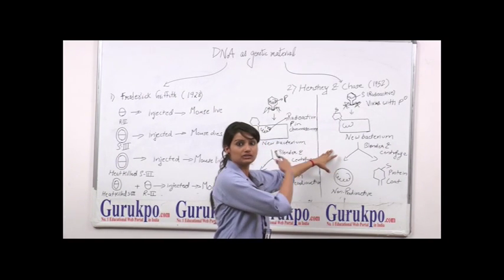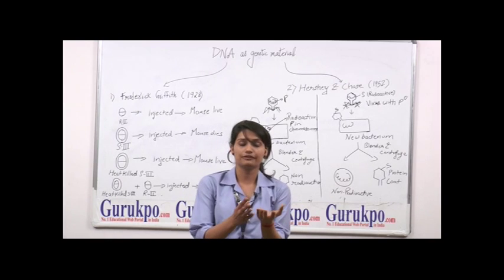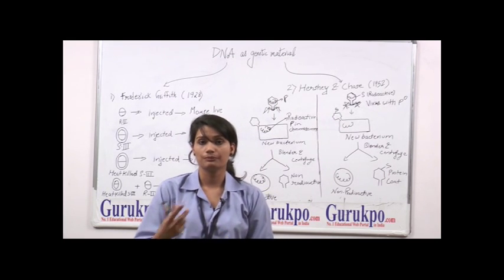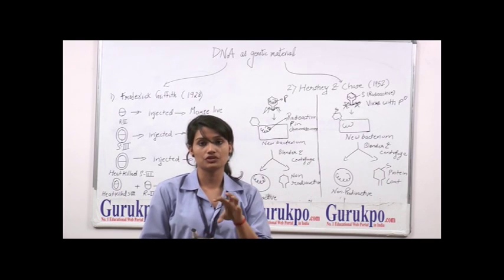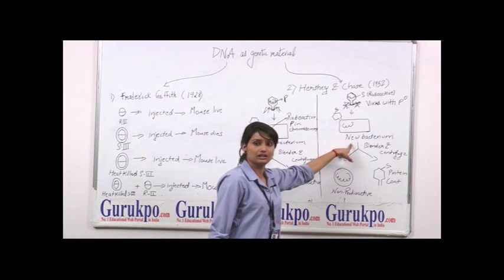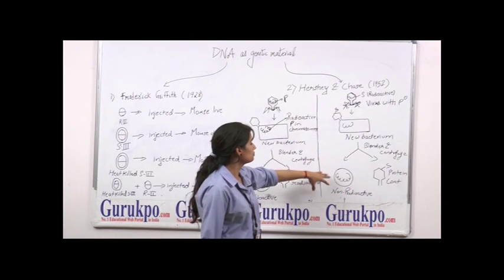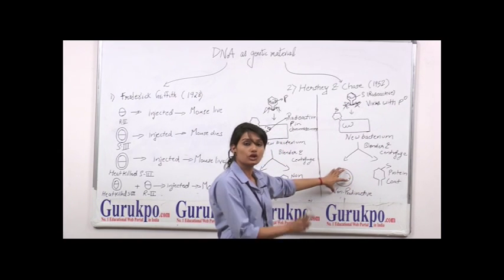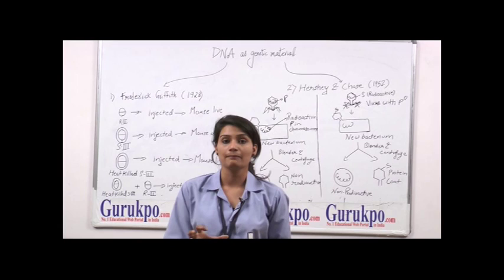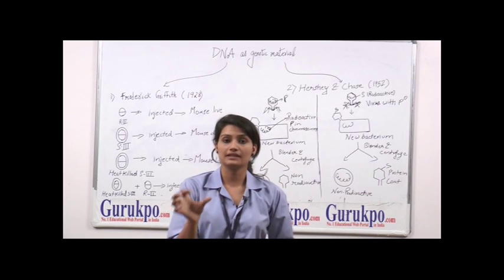In the parallel experiment using radioactive sulfur: since sulfur is present in amino acids, and amino acids form proteins, the radioactivity was restricted only to protein, not to DNA. When the phage was used to infect new bacteria, DNA entered the bacterium. After 20 minutes the E. coli released the phage, and they found that the radioactivity was not present in the DNA this time. This confirmed that DNA passes from parent to progeny — meaning DNA is the genetic material.